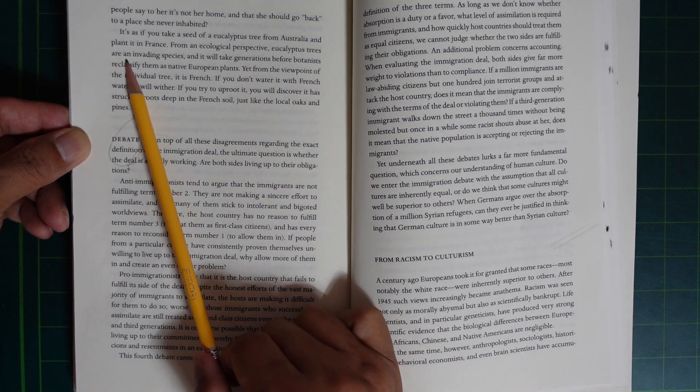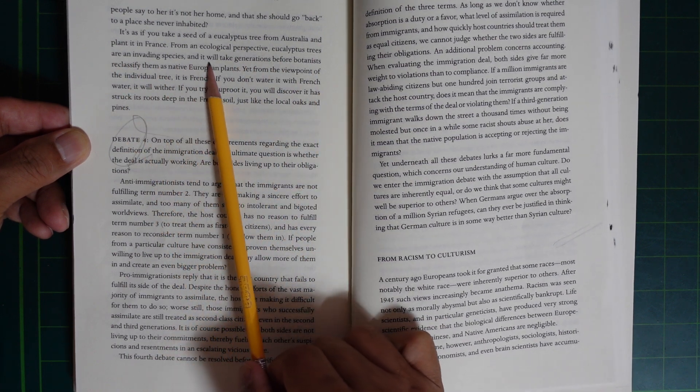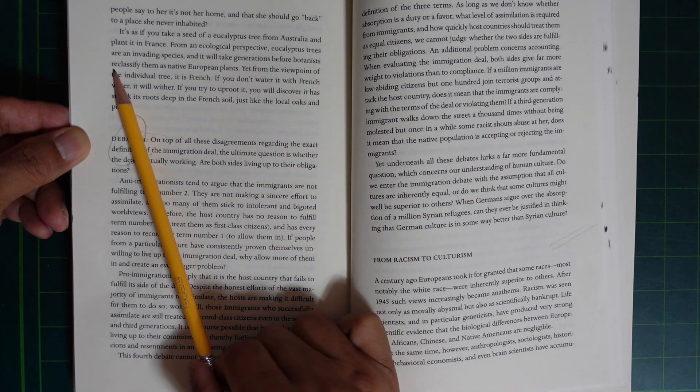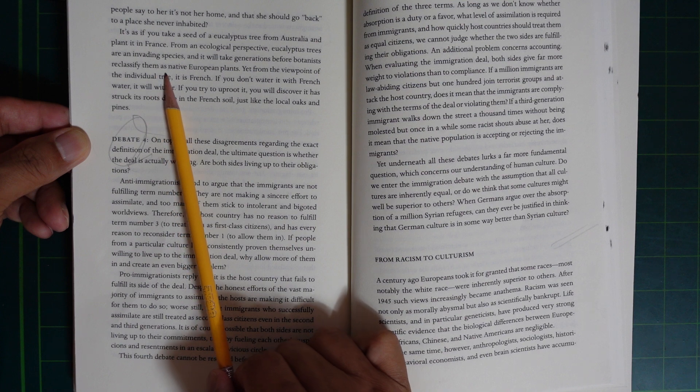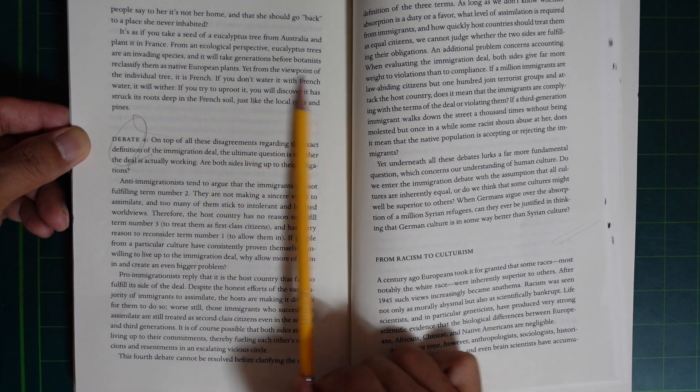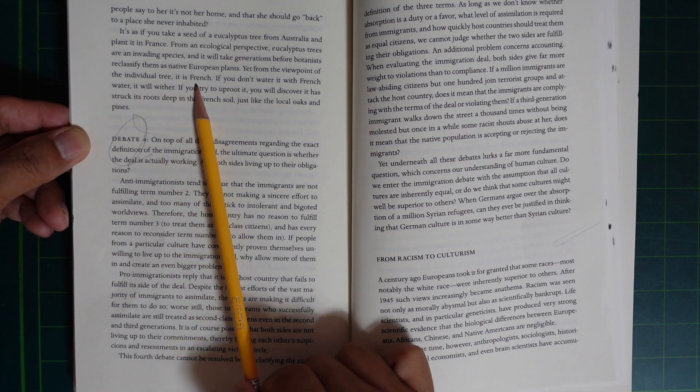From an ecological perspective, eucalyptus trees are an invading species and it will take generations before botanists reclassify them as native European plants. Yet, from the viewpoint of the individual tree, it's French.